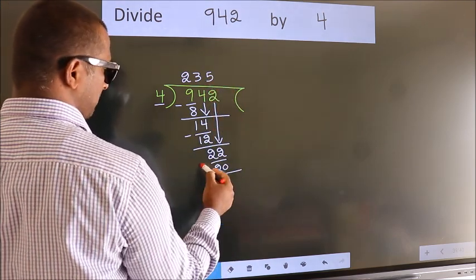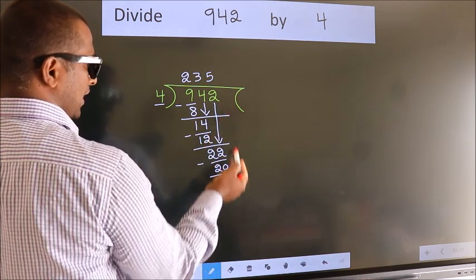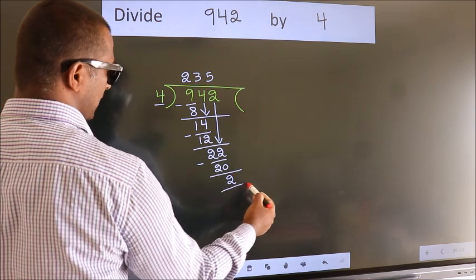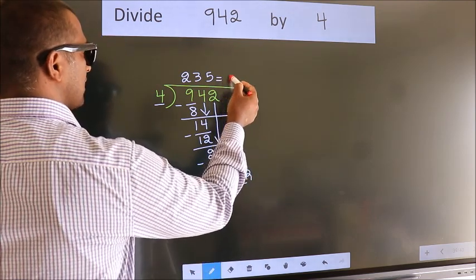Now we subtract. We get 2. No more numbers to bring down. So we stop here. This is our remainder. This is our quotient.